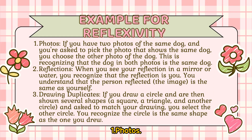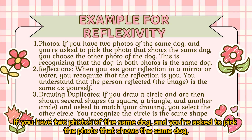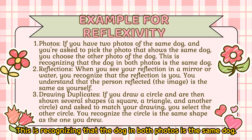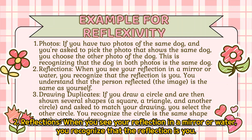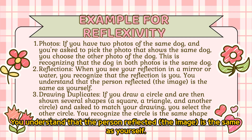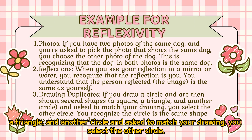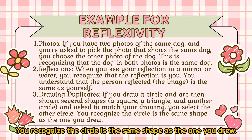For example: 1. Photos — if you have two photos of the same dog and you're asked to pick the photo that shows the same dog, you choose the other photo of the dog. This is recognizing that the dog in both photos is the same dog. 2. Reflections — when you see your reflection in a mirror or water, you recognize that the reflection is you. 3. Drawing duplicates — if you draw a circle and are shown several shapes and asked to match your drawing, you select the other circle, recognizing it as the same shape as the one you drew.